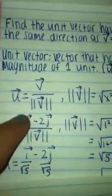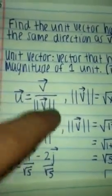So the magnitude is going to go on the bottom. So it's going to be vector v on top, vector i minus 2 vector j.